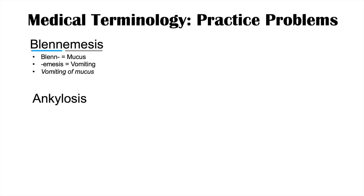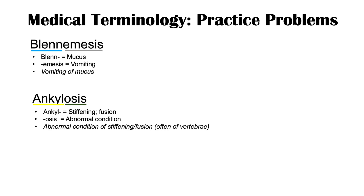The next word is ankylosis. Ankyl means stiffening or fusion, and the suffix osis means an abnormal condition. So ankylosis is an abnormal condition involving stiffening or fusion — often of the vertebrae. You can think of ankylosing spondylitis, a condition where we see an abnormal stiffening or fusion of the vertebrae.